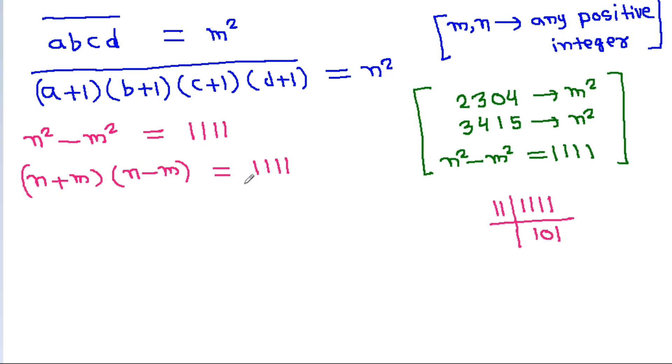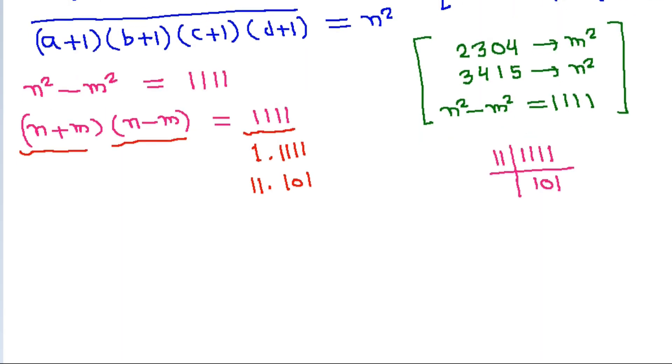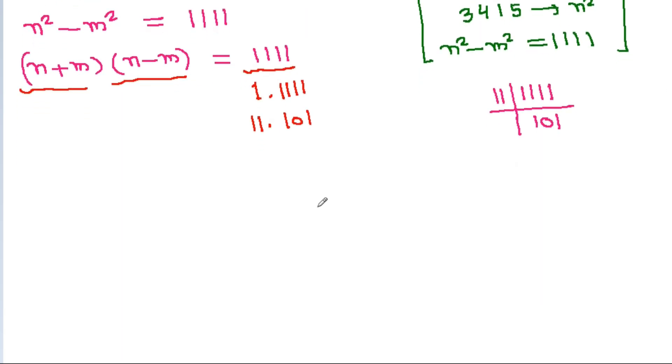That means 1111 can be written as a product of two integers in two different ways. And of course, N plus M will be greater than or equal to N minus M.